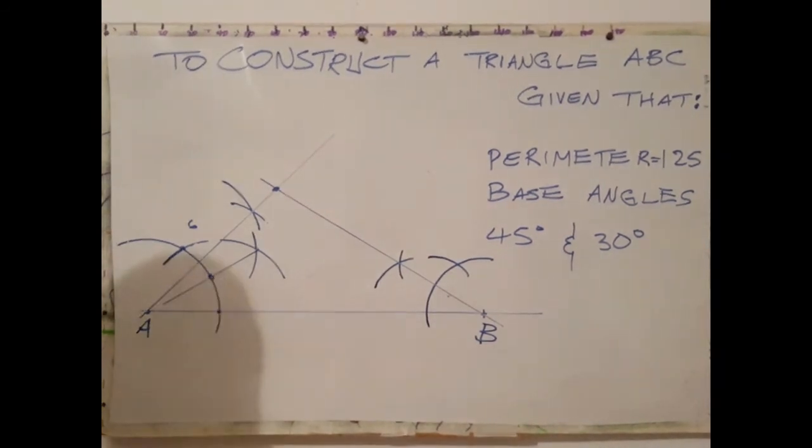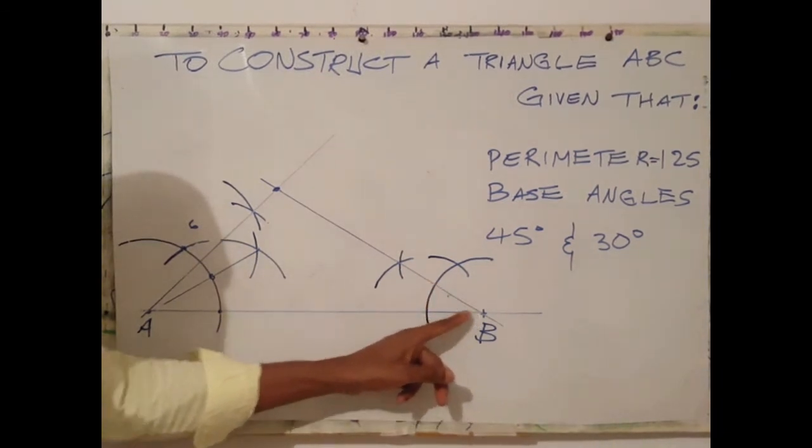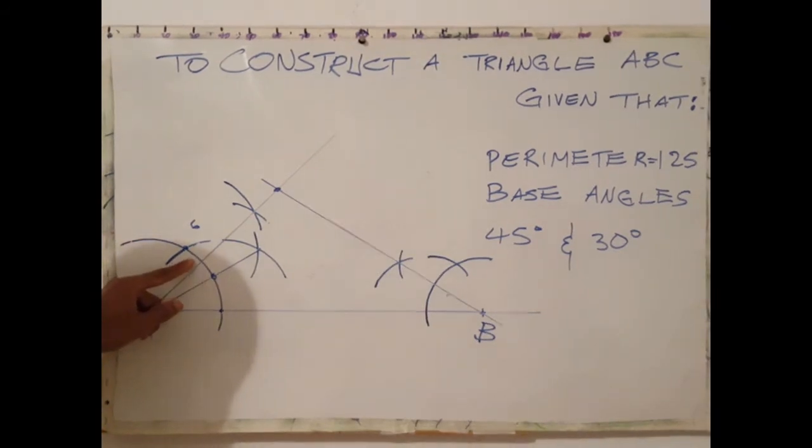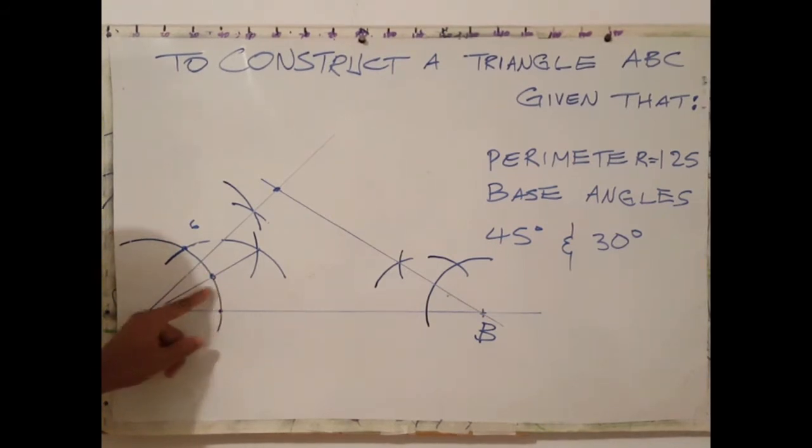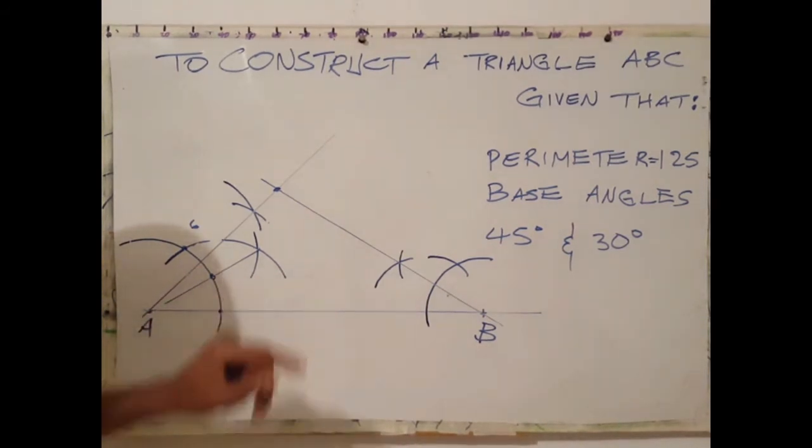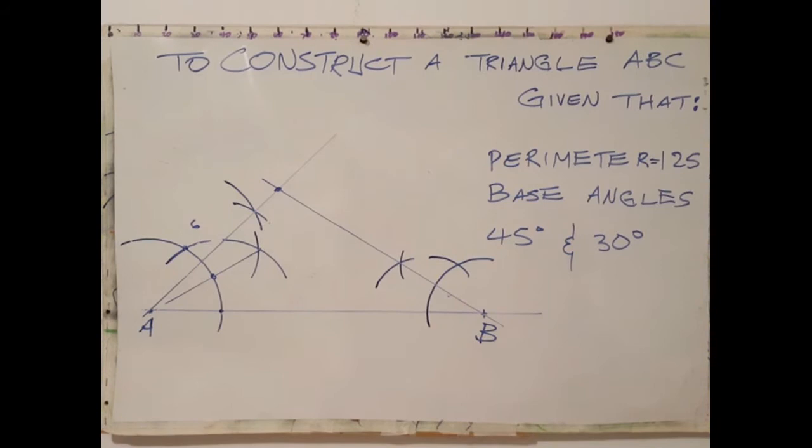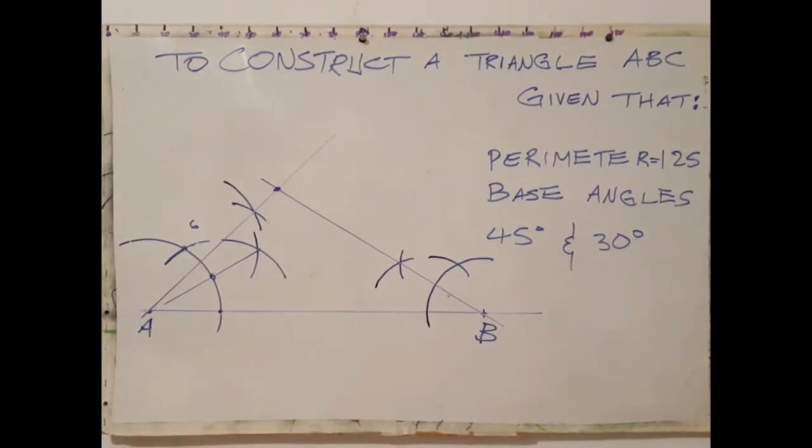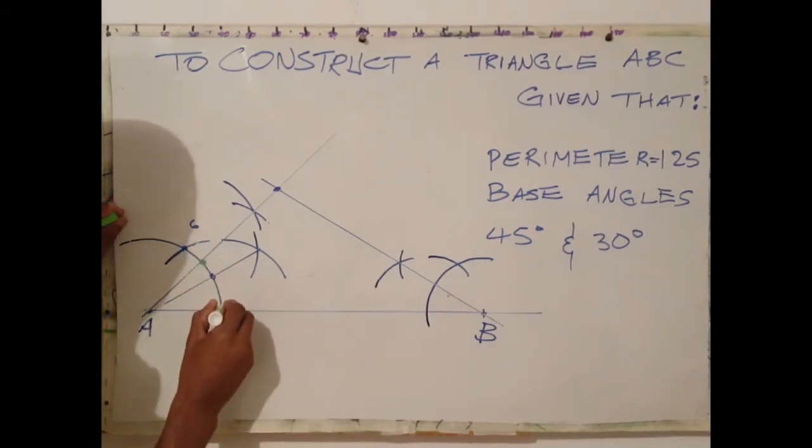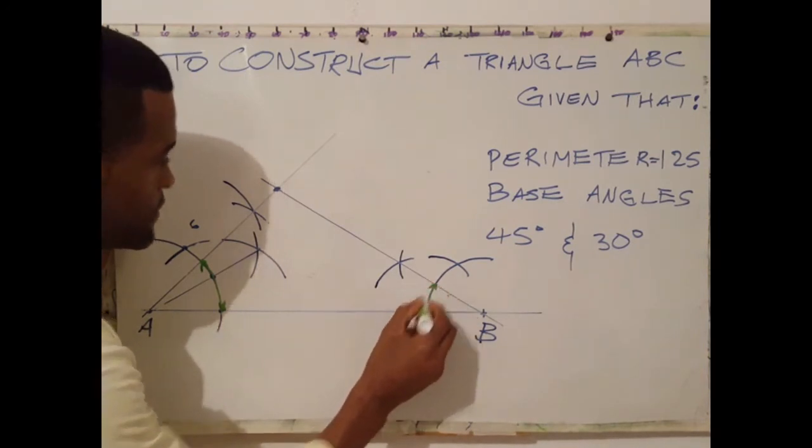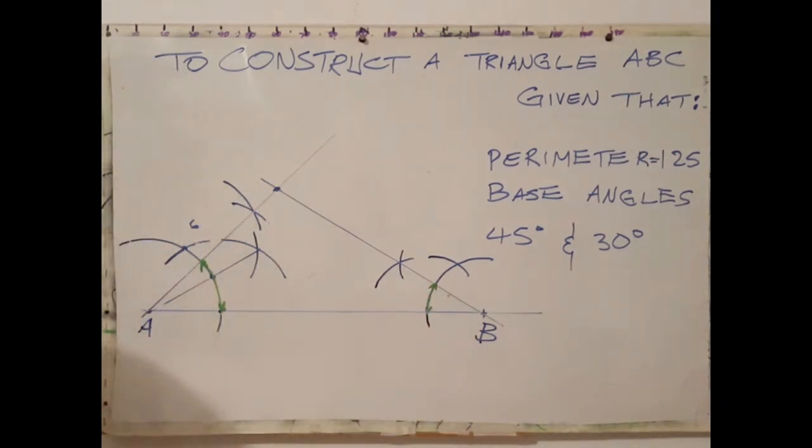The next step is to bisect the 30° angle and also bisect the 45° angle at the point where both angles meet. I will be bisecting the 45° angle, which is from here to there, and I will also be bisecting the 30° angle. At the point where both bisectors meet, we're going to draw a parallel line.